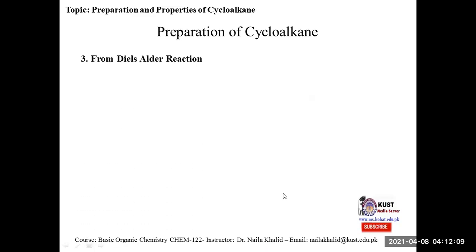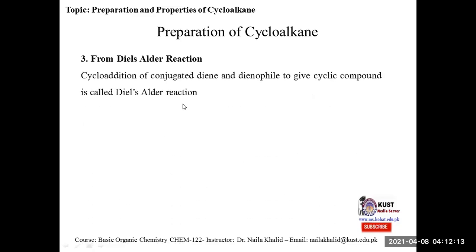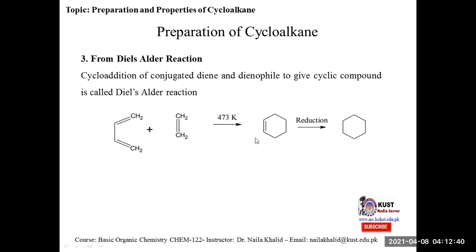The third method for preparation is from the Diels-Alder reaction. It is a cycloaddition reaction of a conjugated diene and a dienophile. The dienophile is any carbon-carbon double bond and the diene is a conjugated diene. Cycloaddition takes place and this type of reaction is known as the Diels-Alder reaction. Here is the reaction: the dienophile reacts with the diene, cyclization takes place leading to the cycloaddition product — cyclohexene. Upon reduction, it is converted into cyclohexane, forming a six-membered ring.